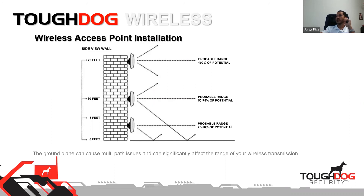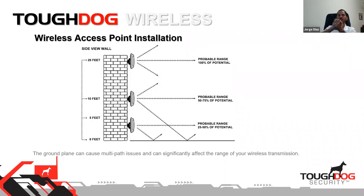Here are the recommended mounting heights from the ground: at 5 feet you're losing potential signal; at 10 feet you still lose some signal; at 20 feet you'll be perfectly fine — the wave can stretch and travel cleanly to its destination, giving you 100% potential. In the 15 to 20 foot range you'll be perfectly fine. Stay away from the ground to preserve effectiveness on the wavelength.